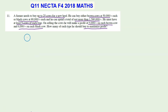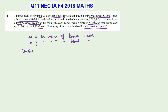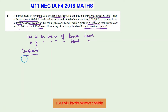First, we need to define our variables. Let x be the number of brown cows and let y be the number of black cows. Now we need to think about all the conditions — we call them constraints — things he needs to take into account. This is where the mathematical model comes in.